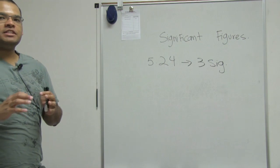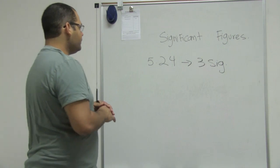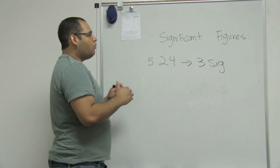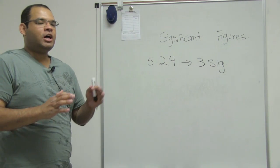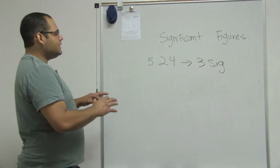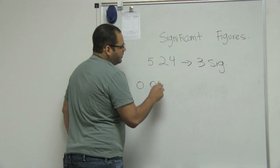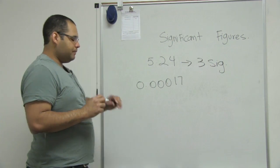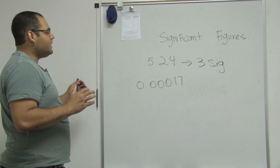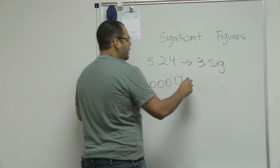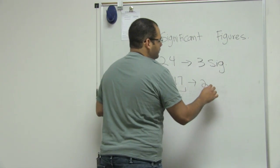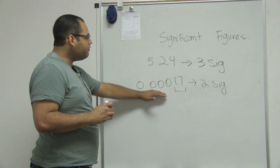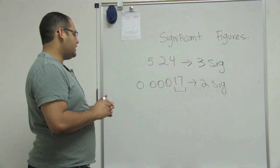Now if I have a zero in my number, I need to check to see if the zero will count or won't as a sig fig. The first rule when talking about a zero is if the zero is on the left side. So if I have 0.00017, all zeros are on the left side, so they do not count as significant numbers. If I need to say how many sig figs I have here, I will say only two, because all zeros are located on the left side of my number.